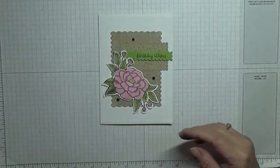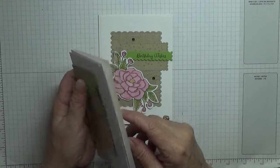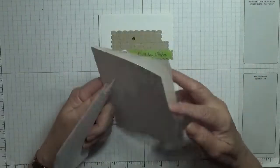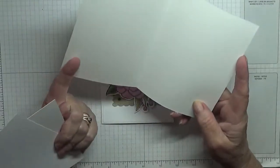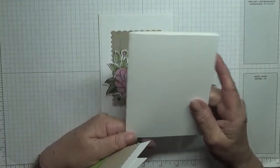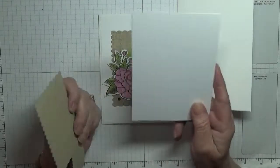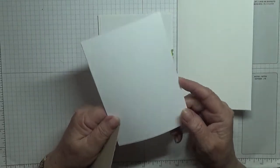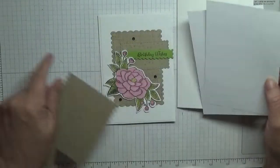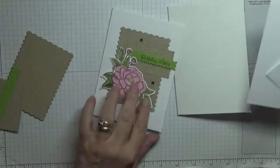For the sentiment I just used Varied Vases and Birthday Wishes. For the cardstock, I have white blank at 8 1/4 by 5 7/8 scored at 4 1/8, and two pieces of white at 5 5/8 by 3 7/8, one for the inside and one for the outside.